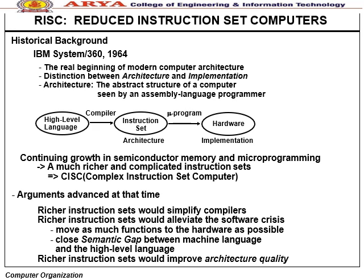Reduced Instruction Set Computer (RISC) — historical background: IBM System/360 in 1964 marked the real beginning of modern computer architecture and the distinction between architecture (abstract structure seen by the assembly language programmer) and implementation. Growth in semiconductor memory and microprogramming led to richer, more complex instruction sets (CISC). Arguments at the time: a richer instruction set would simplify compilers, elevate the software crisis, move functions to hardware, and close the semantic gap between machine language and high-level language.